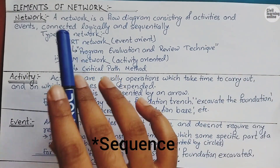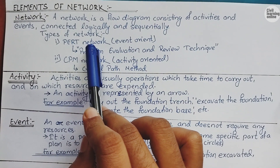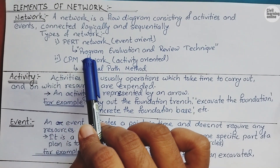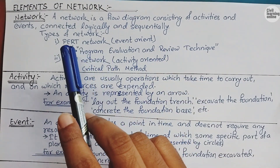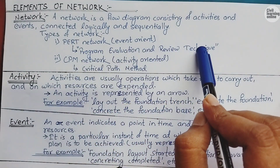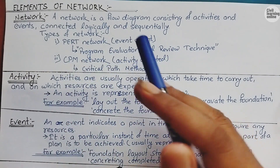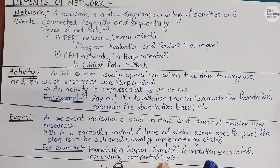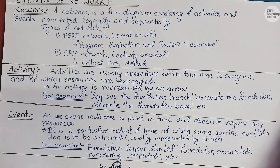In project management there are basically two types of networks. The first one is the PERT network, which is event-oriented, and the second one is the CPM network, which is activity-oriented. PERT stands for Program Evaluation and Review Technique, and CPM stands for Critical Path Method. We will discuss how to draw these networks in upcoming videos.